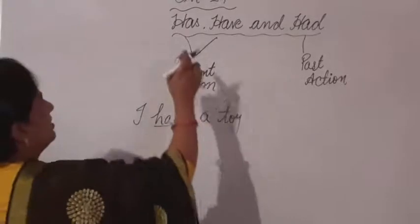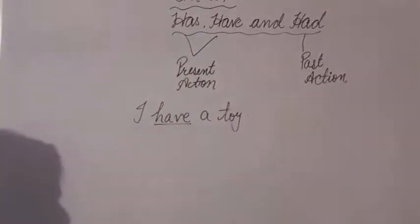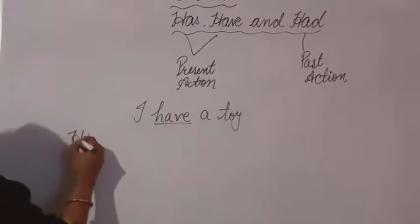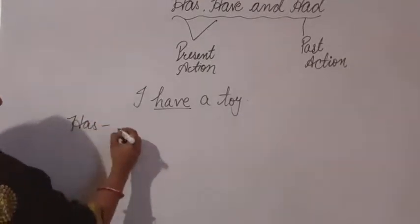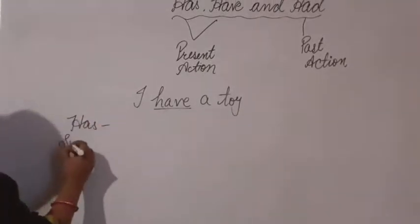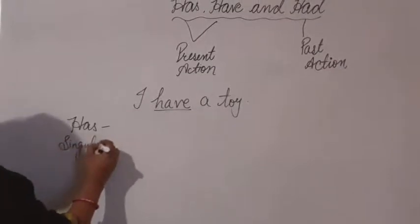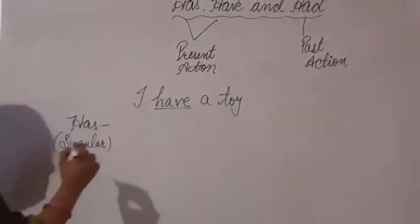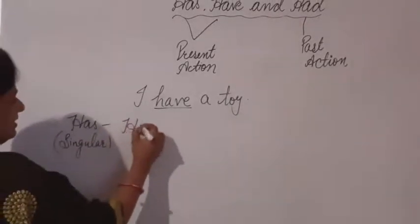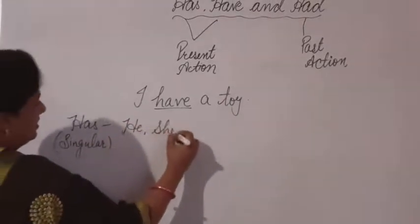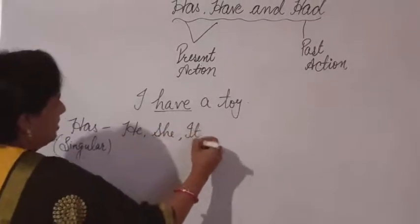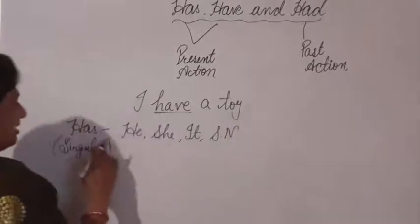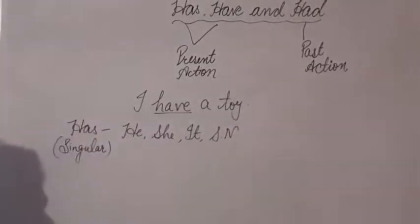So let's start with the rules of has and have. Has is used for singular — singular means one person or one thing. When the subject is he, she, or it, and with a singular noun, we will use has.